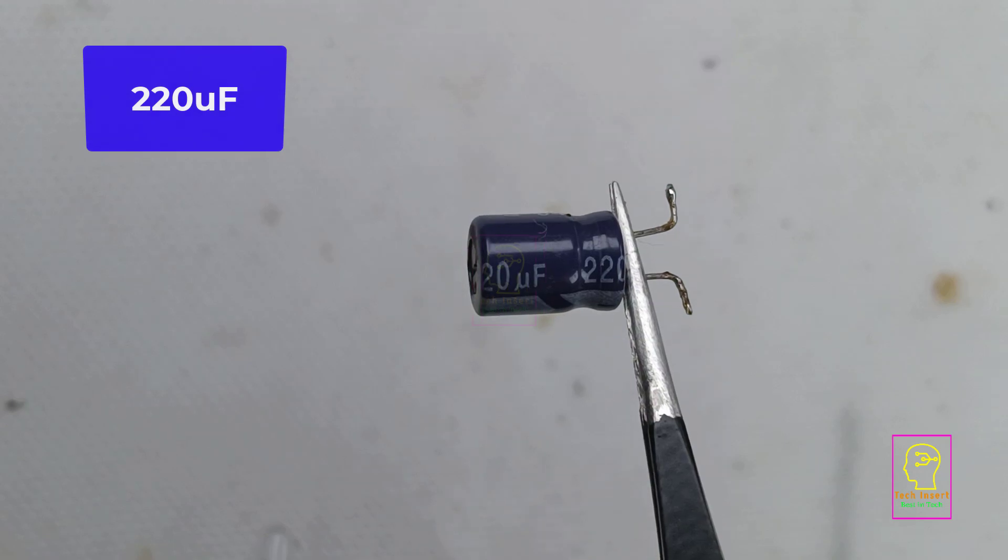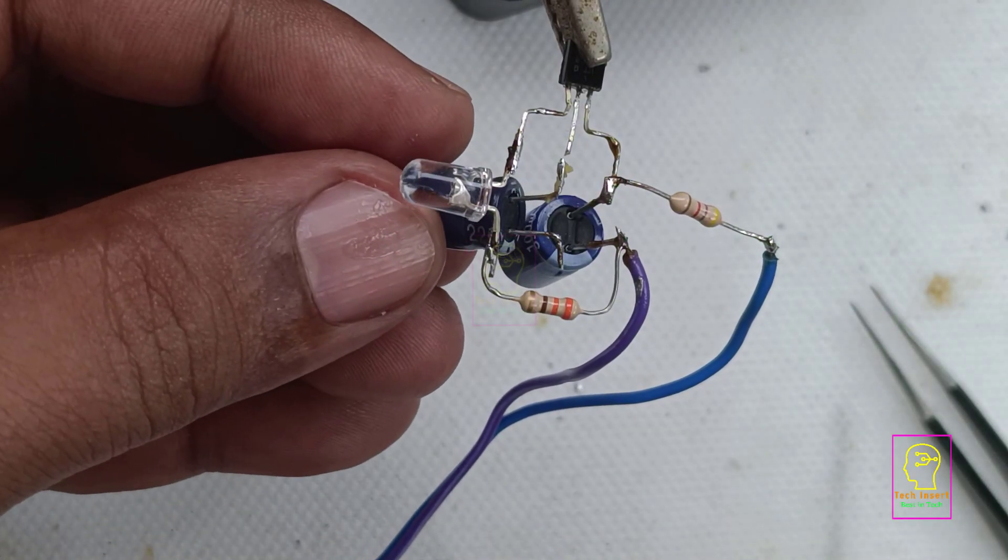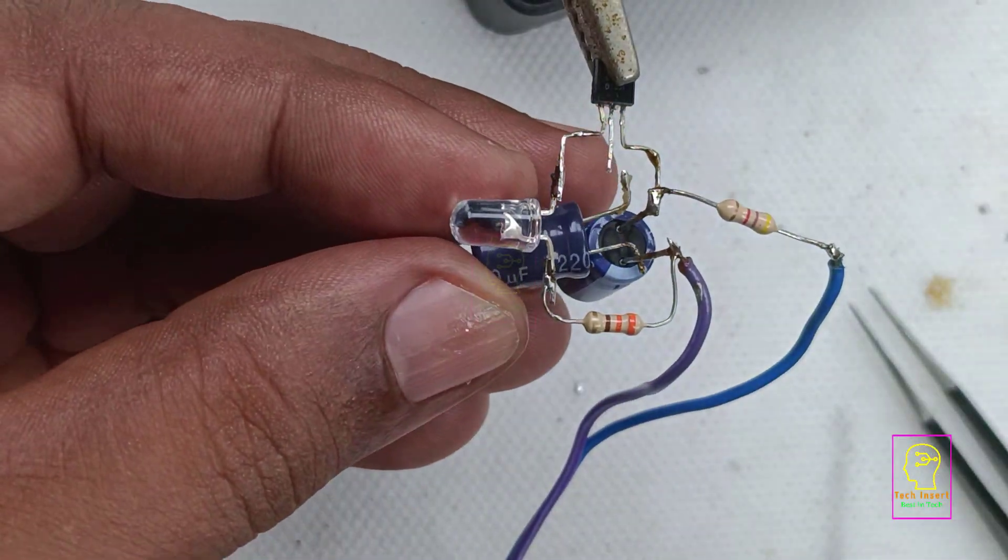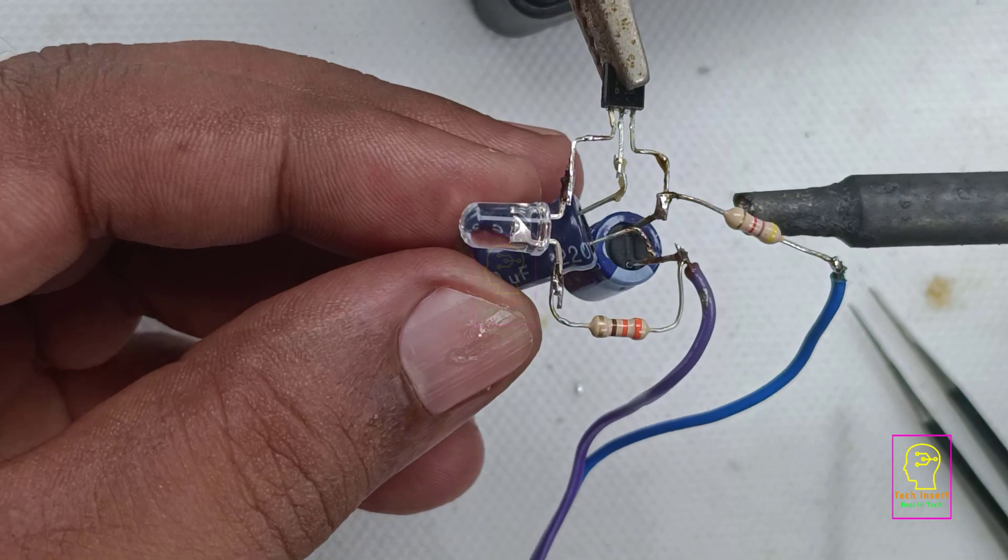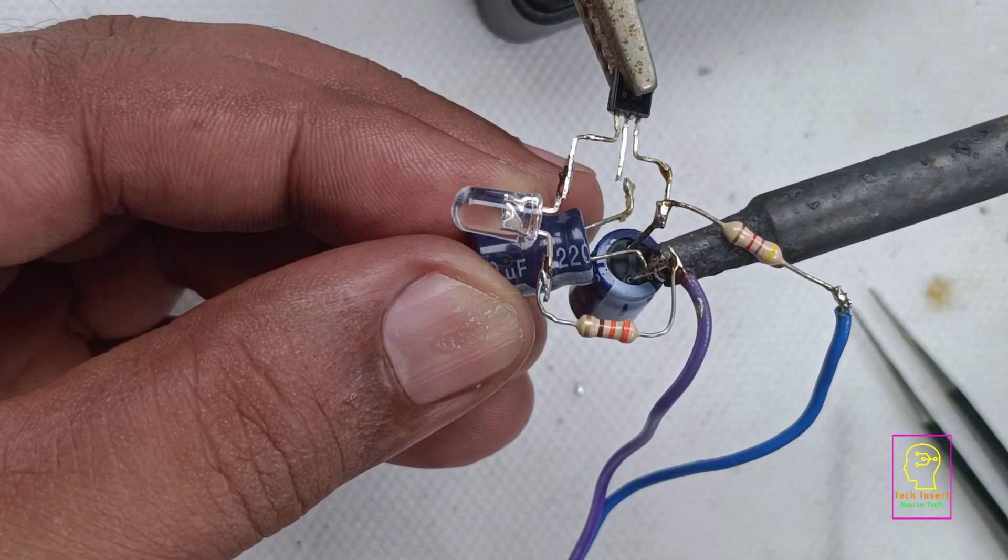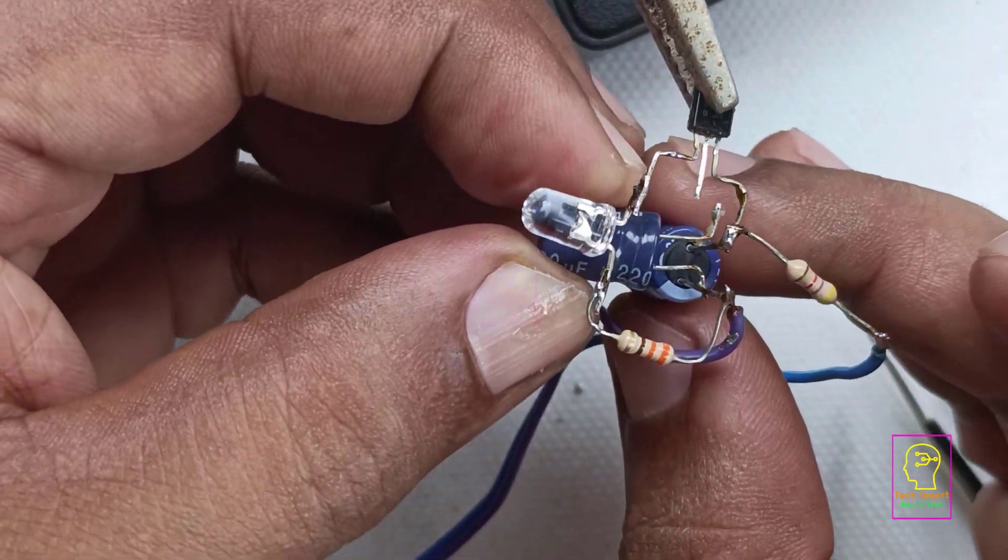Now we will increase the capacitance by giving this 220 microfarad capacitor in parallel to the 100 microfarad capacitor which we have already soldered to this circuit. Now the total capacitance becomes 220 microfarad plus 100 microfarad to form 320 microfarad capacitance.